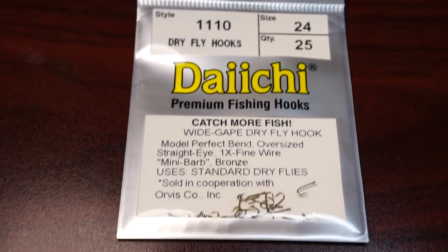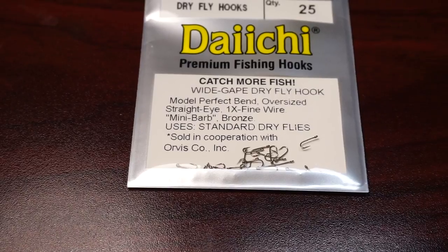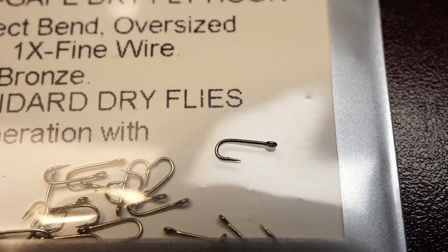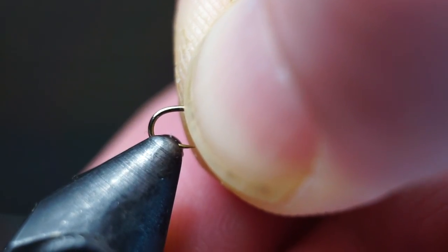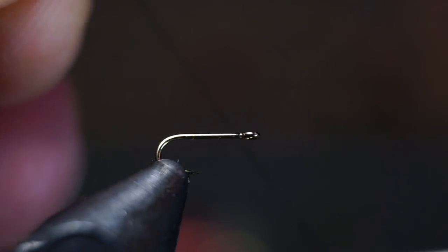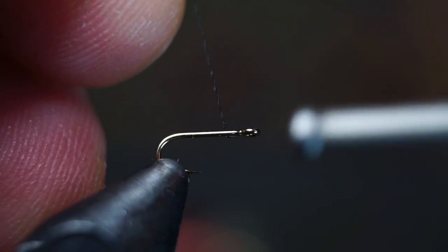We're going to start with a small straight shank dry fly hook, and this Daiichi 1110 works really well. Place whatever hook you're using into your vise securely, then start a very fine thread about a quarter of the way down from the eye of the hook.